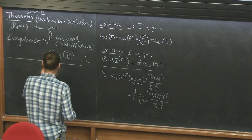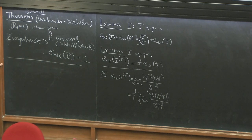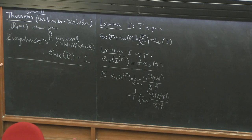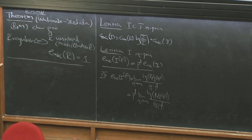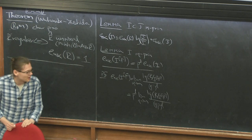Our strategy will be similar to what we did yesterday for F-signature. We will do induction and use equimultiplicity, but things are going to be more challenging because F-signature lives in a strongly F-regular ring, while Hilbert-Kunz multiplicity does not. So we will need to work a bit with tight closure.